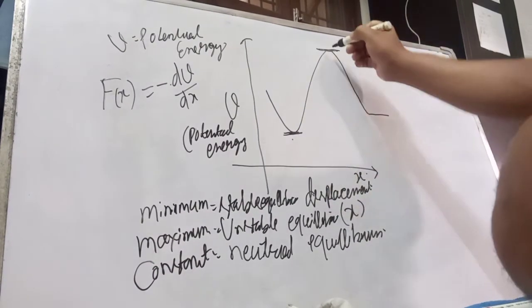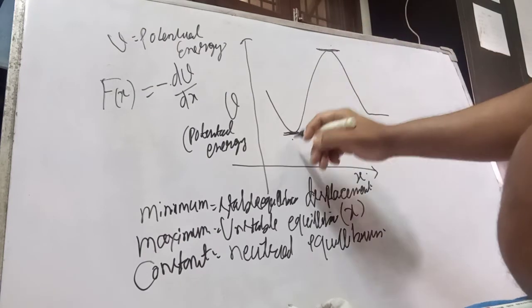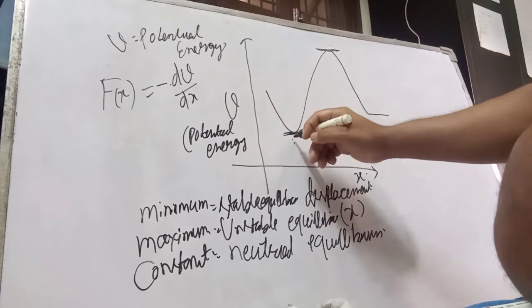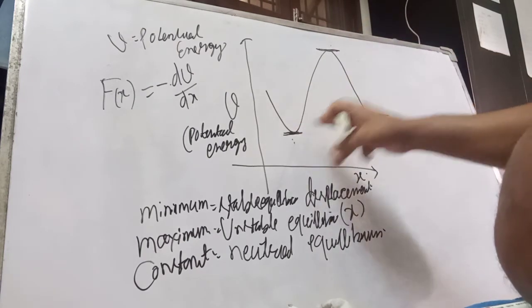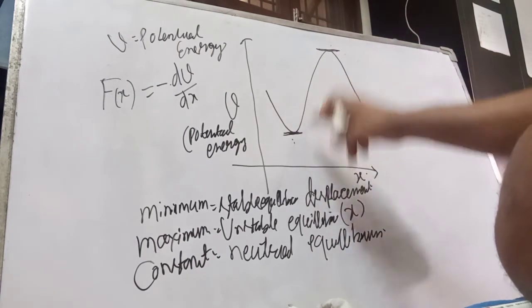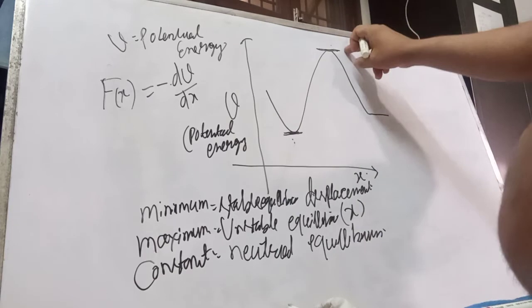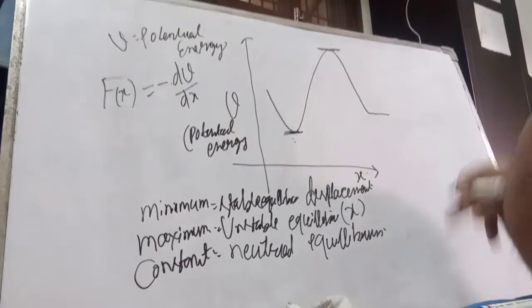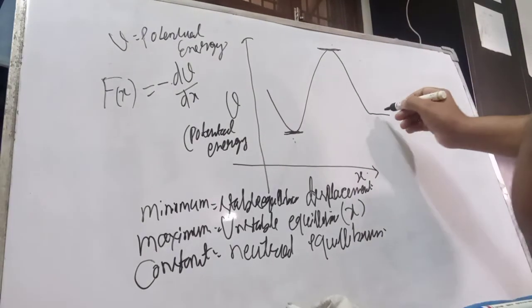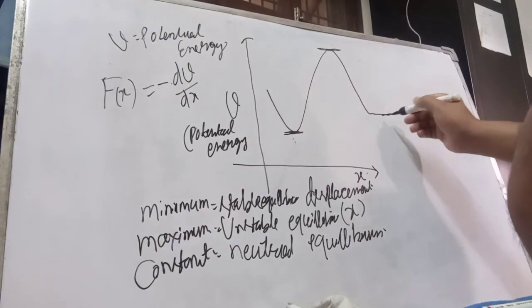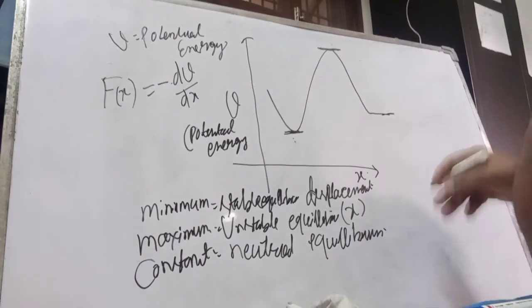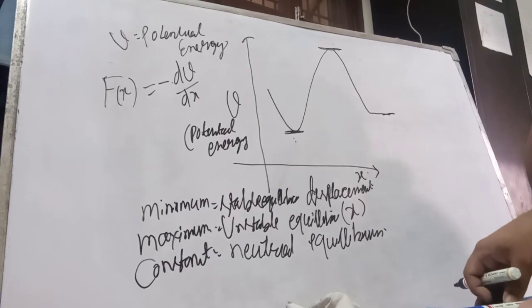This is the minimum point, this is the maximum point. We call the minimum stable equilibrium and the maximum unstable equilibrium. And the constant position is called neutral equilibrium.